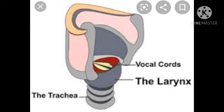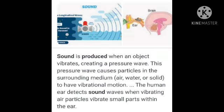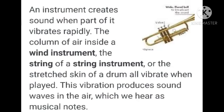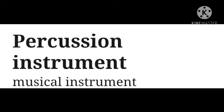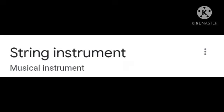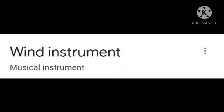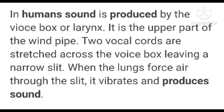In today's video, we have discussed how sound is produced in the form of waves. We then discussed different kinds of instruments — percussion instruments, string instruments, and wind instruments — and finally how humans produce sound with the help of the vocal cords.